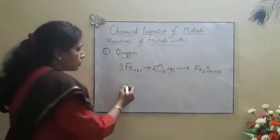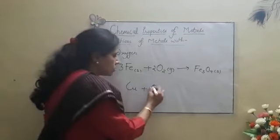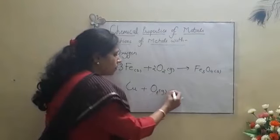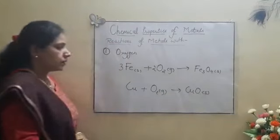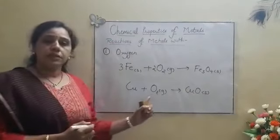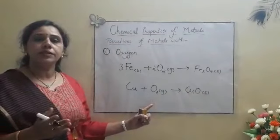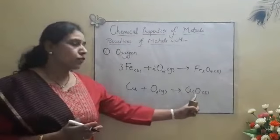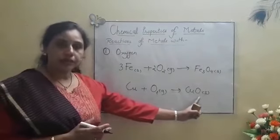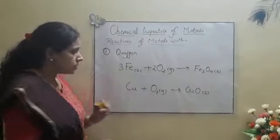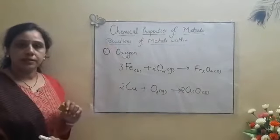Now coming to copper. Copper on strong heating in presence of oxygen will form copper oxide which is black in colour. So when this reaction happens, we see the surface of copper gets covered with a black coating which is of copper oxide. Now this equation is unbalanced. We have to balance it. So we will write 2 here and 2 also at this side.